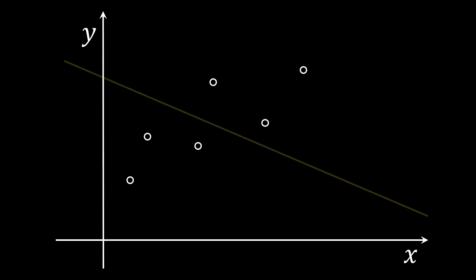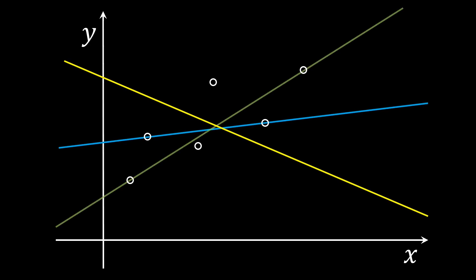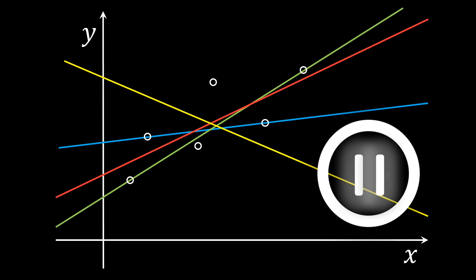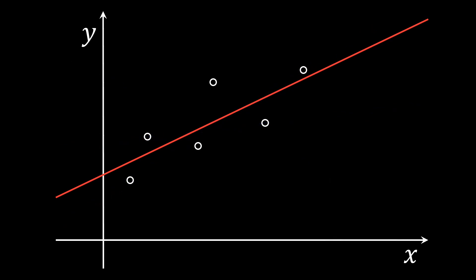One way to go about it is to try a few options and subjectively choose one of them. You may pause the video to think for yourself which of the displayed lines best represents the data. In this example, with these data points, the red line fits best. However, we want to be more rigorous. We want to define precisely what we mean by best and find the numerically optimal solution.